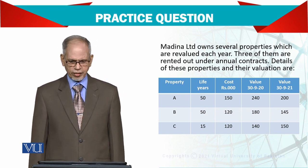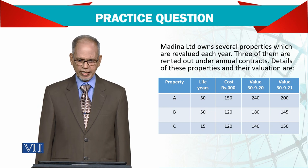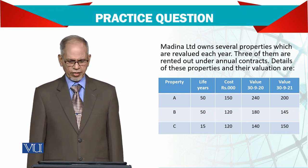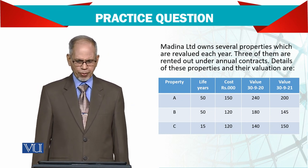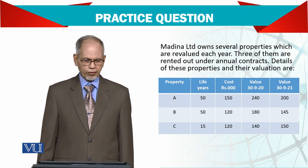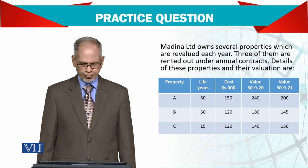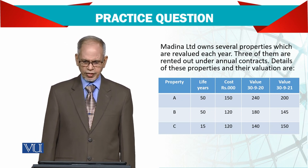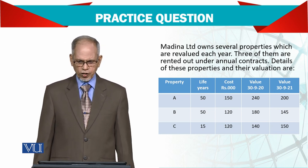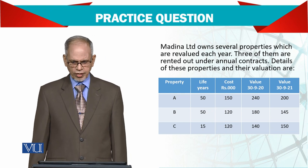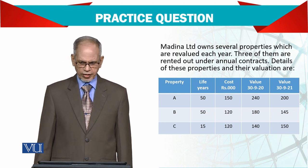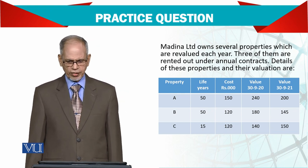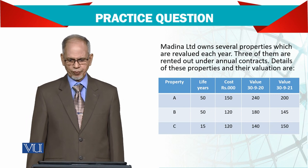Details of these properties and their valuations are: properties A, B, and C. The life of the properties is 50 years, 50 years, and 15 years respectively. Their costs are 150,000,000; 120,000,000; and 120,000,000.